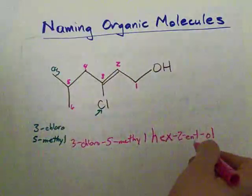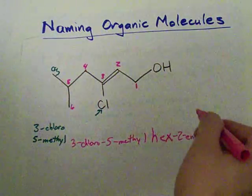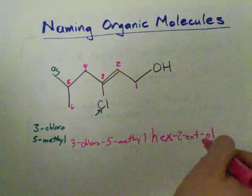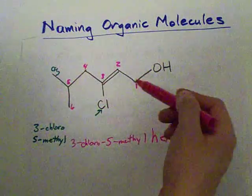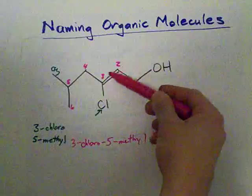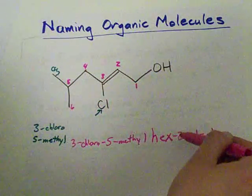Remember, ane is for single bonds. Ene is for double bonds. Yne, that's Y-N-E for triple bonds. And you have to tell people where the double bond starts. Here the double bond starts at carbon number two. And so it's a 2-ene.